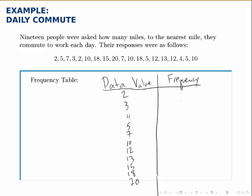So, for instance, I notice that two appears twice in the data set, so it has a frequency of two. Three appears only once, so it has a frequency of one, and so on, and I fill in the rest of the table.